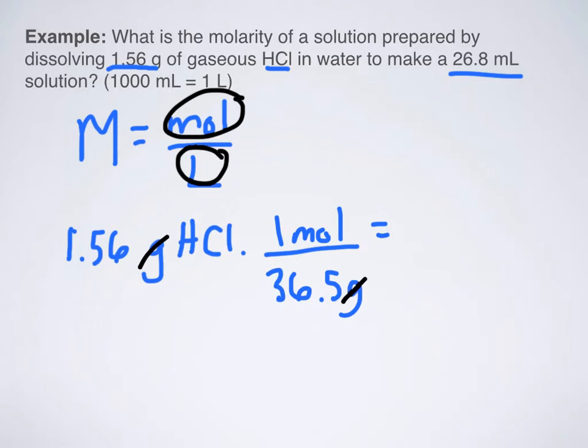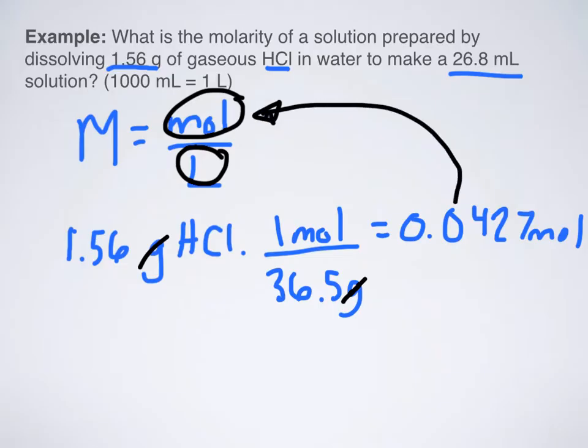I get about 36.5 grams in one mole of HCl. Why did I divide? Well, my grams are going to cancel away. So when I plug that into my calculator, I get about 0.0427 moles of HCl. That's good because that is a unit that I can use in my molarity equation.